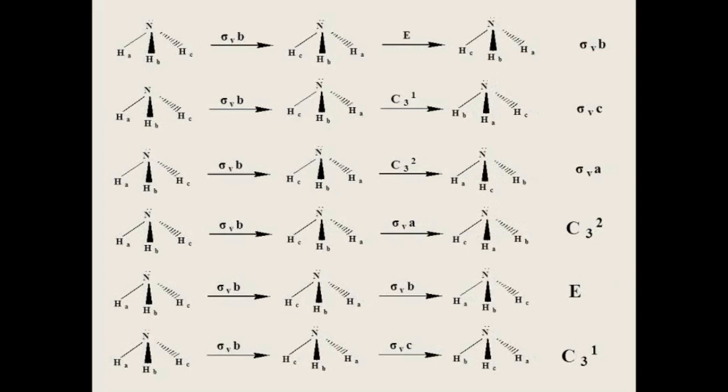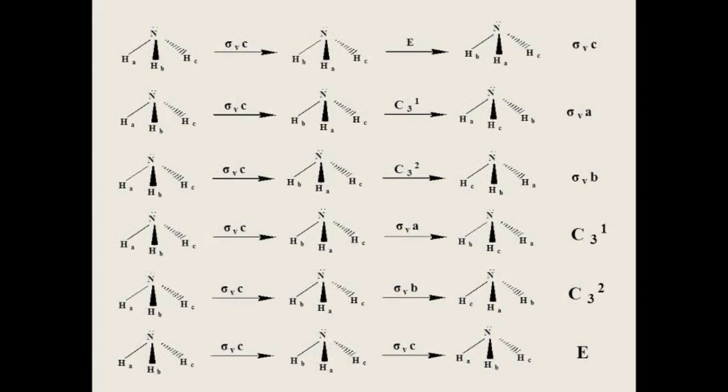For sigma VB followed by all symmetry elements: sigma VB means C and A change their positions. Sigma VB followed by E gives sigma VB. When sigma VB is followed by C3,1 or C3,2, we get the other two planes respectively. Sigma VB followed by sigma VA gives C3,2. Sigma VB followed by sigma VB, an even number of mirror plane operations, gives identity E. The last is C3,1. For sigma VC, the last row can be completed by noting that none of the symmetry elements can be repeated in any row or column, so the remaining entry is determined by elimination.